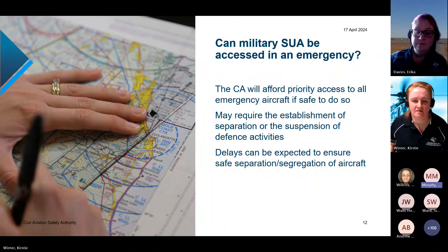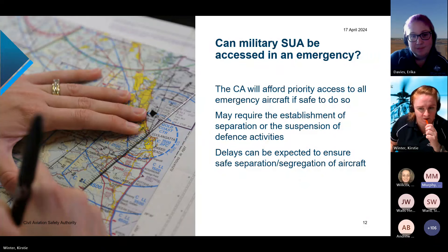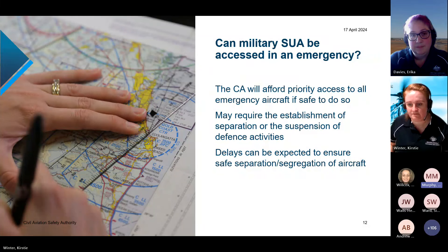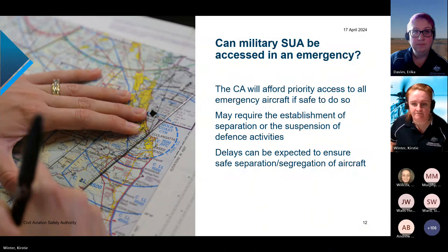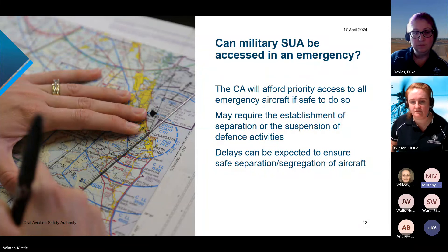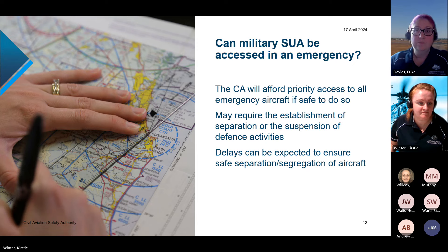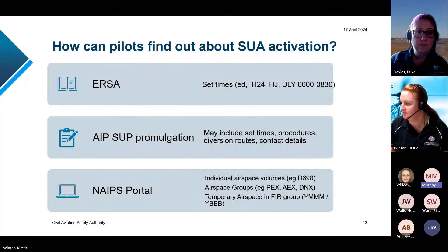Can military special use airspace be accessed in an emergency? The controlling authority or administering authority will afford priority access to all emergency aircraft if safe to do so. This may require the establishment of separation or the suspension of defence activities within that area, which can take some time. Associated activity aircraft may be instructed by the controlling authority to report on the ground and a check fire may be issued. Hence why there might be a delay if an emergency clearance is requested. For further information on access requirements in an emergency, refer to AIP En Route 5.1, which details the general access procedures for special use airspace.